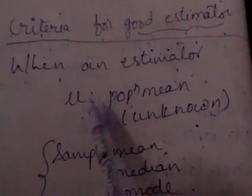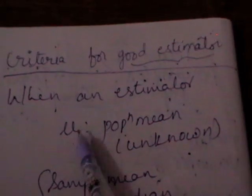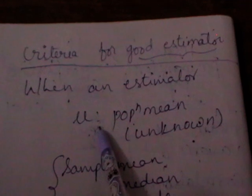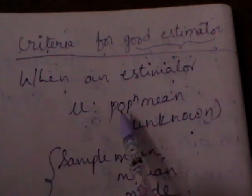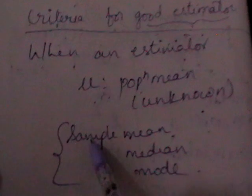A good estimator means whenever we have a population constant — say a parameter — it is to be estimated, as population parameters are unknown to us. To estimate the parameters we use statistics, such as sample mean, sample median, or sample mode. Among all those, we should choose the good estimator. There is a criteria for an estimator to be a good estimator.